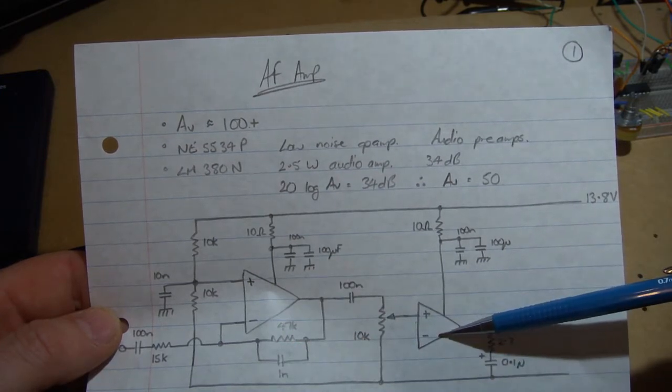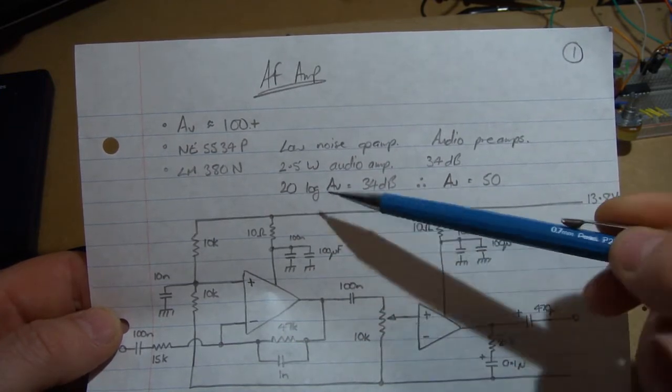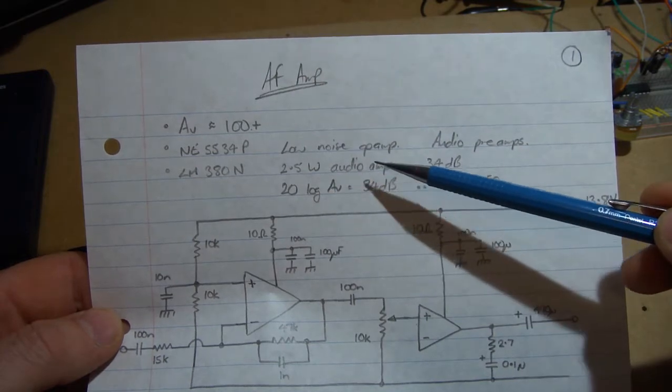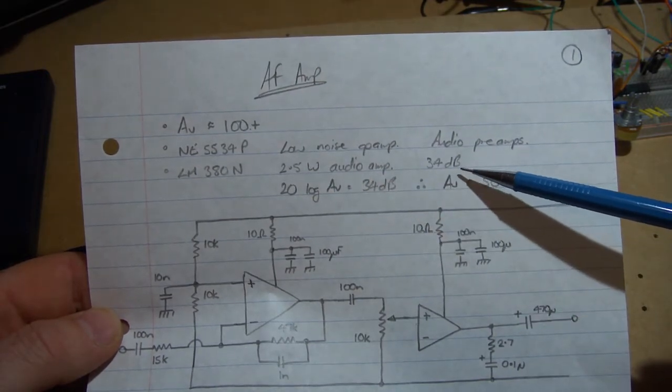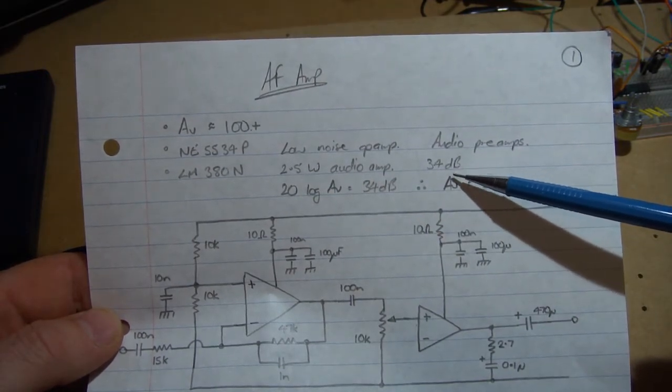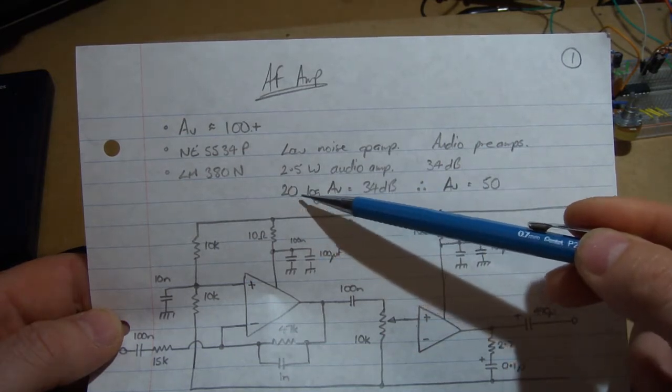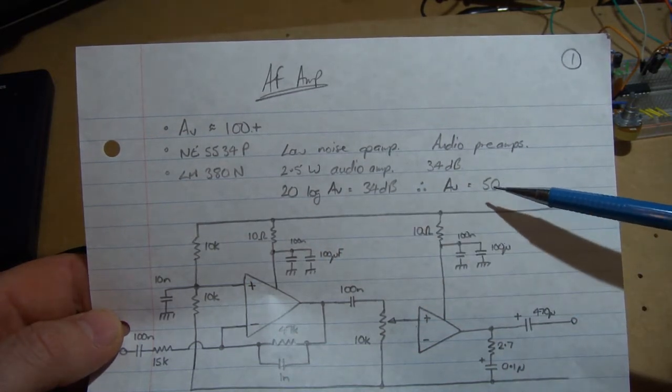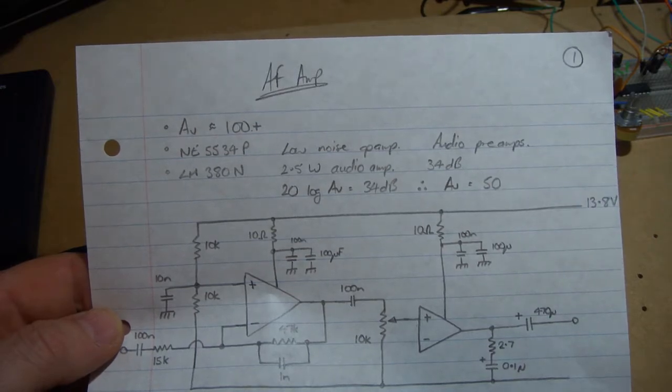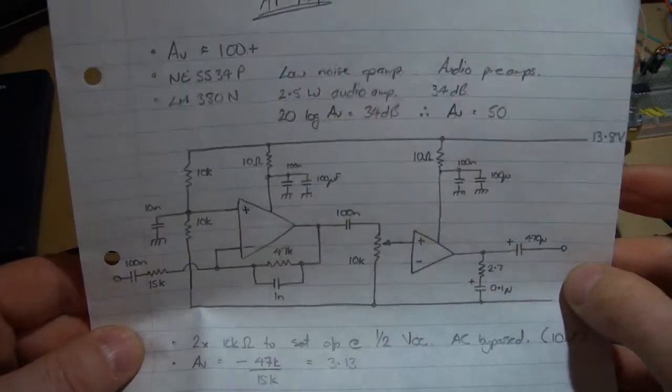So I'm going to use it as an audio preamp and then follow that up by an LM380N, which is a 2.5 watt audio amp which has a fixed gain of 34 dB, which turns out to be, so 20 log AV equals 34, so has a fixed gain of 50, voltage gain of 50.